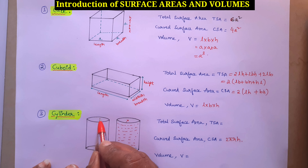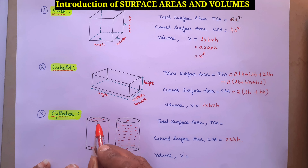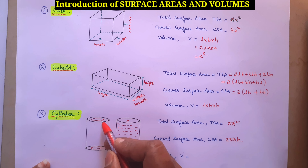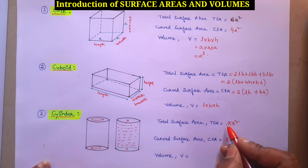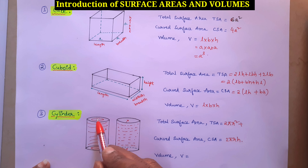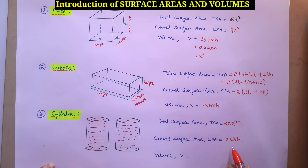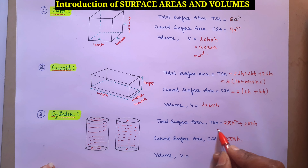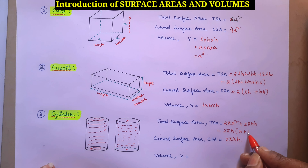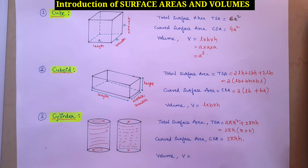To find total surface area, we need the upper and lower circular parts as well. The area of one circle is πR², and since there are two circles (top and bottom), that gives 2πR². Adding the curved surface area 2πRH, we can take 2πR as common, giving total surface area = 2πR(R + H).